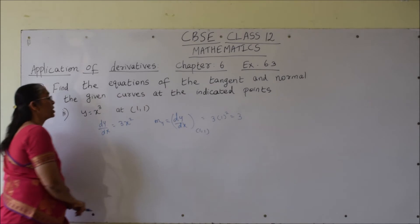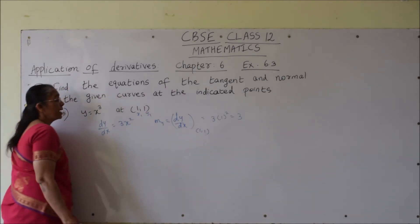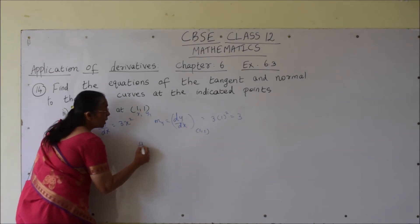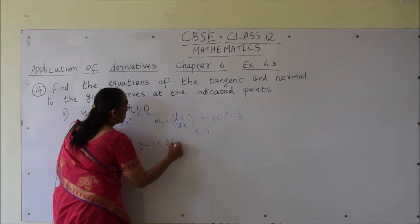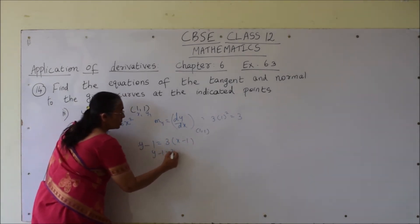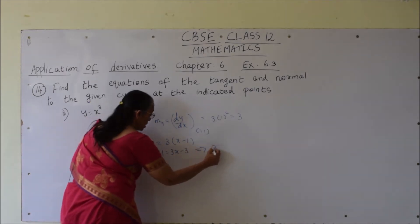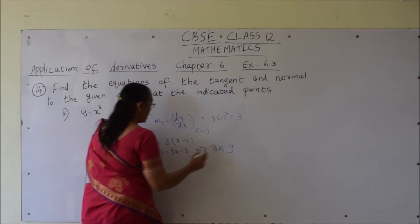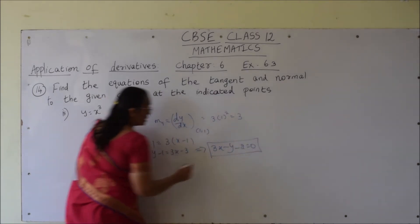This is the slope of tangent. Now the equation of tangent at the point (x1, y1) which is (1, 1) is y minus 1 equals slope 3 times of x minus 1. So y minus 1 is 3x minus 3, which implies 3x minus y minus 2 is equal to 0 is the equation of tangent.